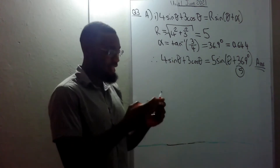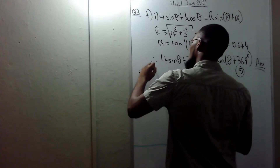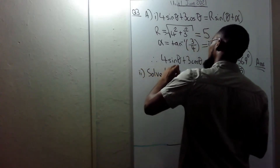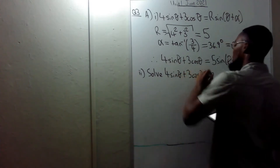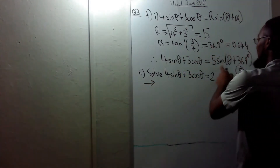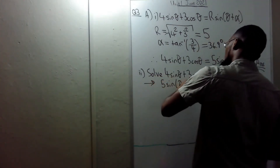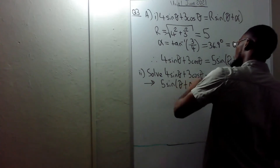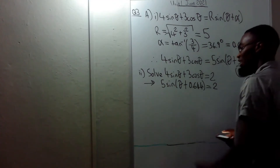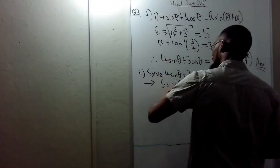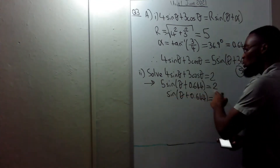Part 2: solve 4sinθ + 3cosθ = 2, which means we solve 5·sin(θ + 0.644) = 2. Dividing both sides by 5 gives sin(θ + 0.644) = 2/5.